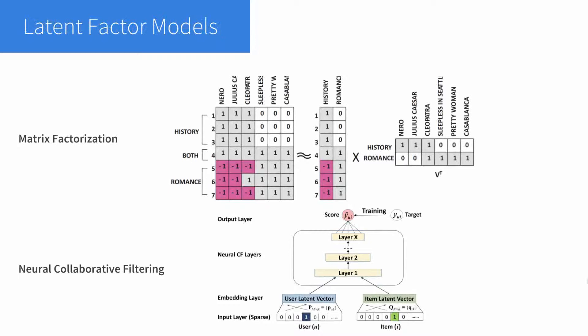Typically, latent factor models map users and items into latent vectors in a low-dimensional space, and compute each user-item preference score based on a function of the two latent vectors. For example, performing inner product in matrix factorization, or performing non-linear transformation with neural networks in neural collaborative filtering.